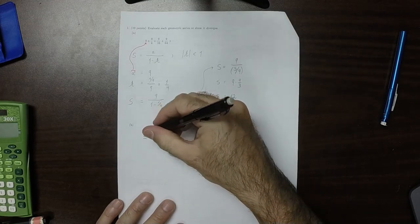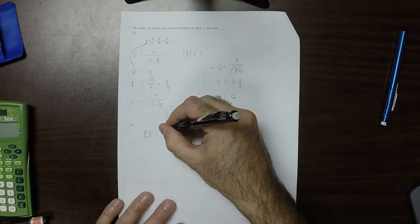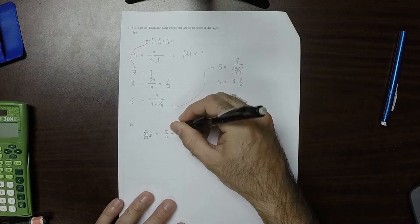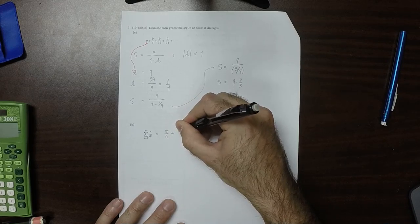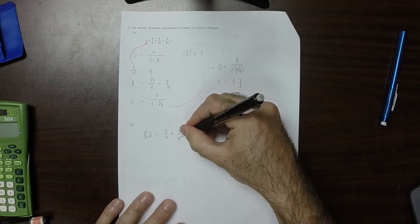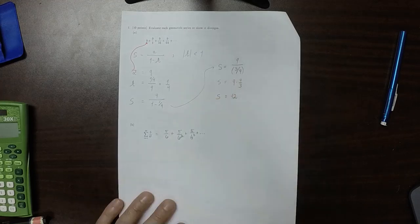This sum, well, this sum is 5 over 6 plus 5 over 6 squared plus 5 over 6 cubed, plus dot dot dot.